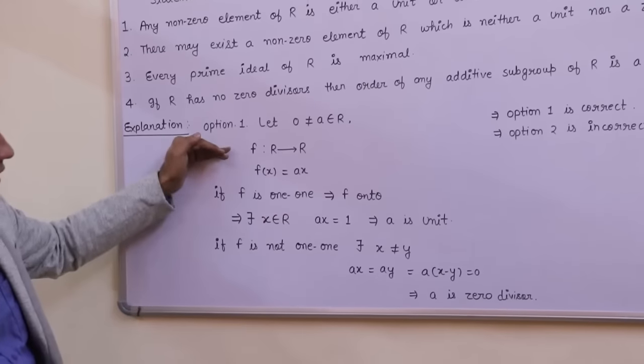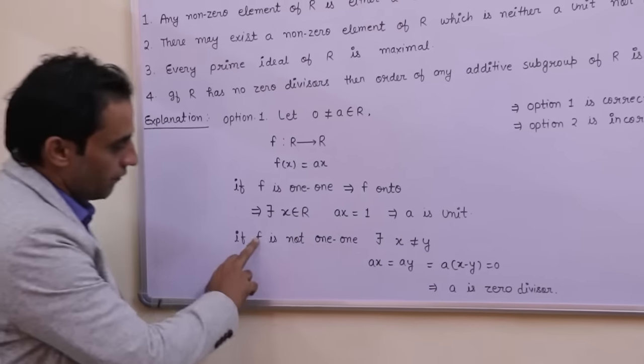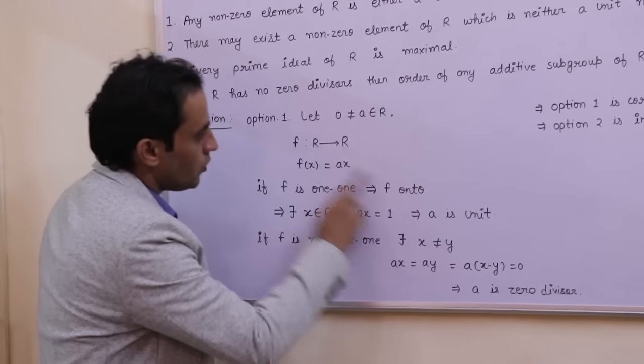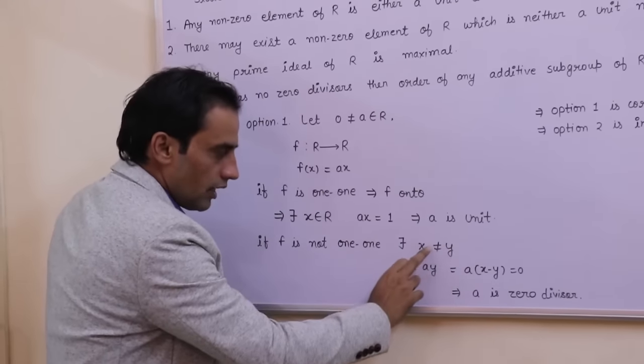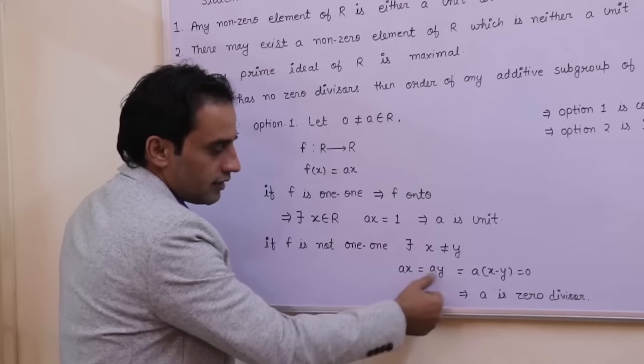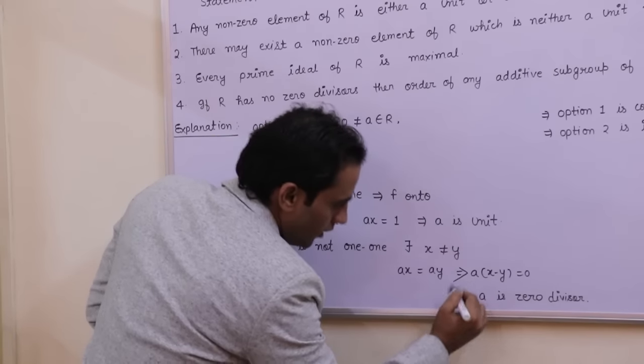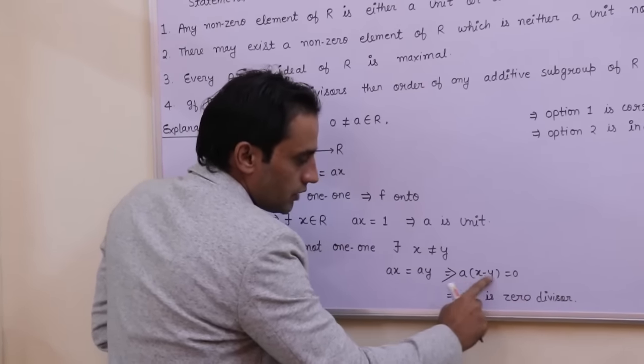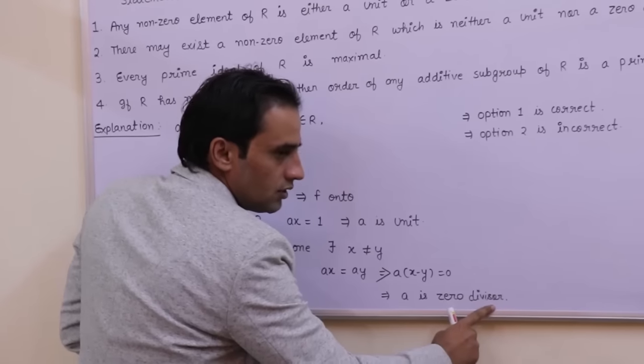Second: if F is not one-one, then there exist X, Y in R such that X not equal to Y and AX equals AY, implies A times (X minus Y) equals 0. So X minus Y is not 0, A is not 0, implies A must be a zero divisor.